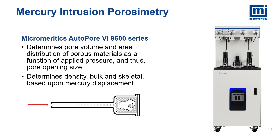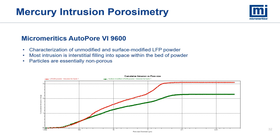Another method for differentiating materials is mercury intrusion porosimetry, or MIP. Here the volume of mercury intruding into open porosity of a test specimen is determined as a function of applied pressure. Typically this method is used to determine pore volume and pore area distributions as a function of applied pressure and thus opening size. In addition, bulk and skeletal densities can be determined based on the amount of mercury displaced. From the MIP analysis of the two LFP samples we do see some differences, but using BET surface area and ACUPIC skeletal density values we can say that what we see is interstitial filling of mercury between particles and not pore filling. The differences in the intrusion curves are consistent with differences in agglomeration of the dry particles, as no sample dispersion is used prior to MIP analysis.